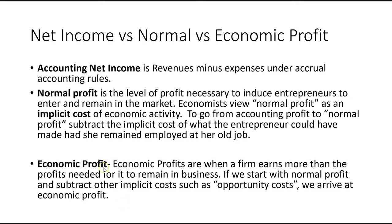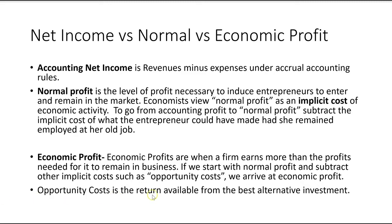To earn any economic profit, you first have to earn normal profit and then cover opportunity costs. Opportunity cost is the return available from the best alternative investment or best alternative use of resources. Starting with normal profit and subtracting those other implicit costs — such as opportunity costs — gives economic profit. If you still have a positive number after that subtraction, you have economic profit.